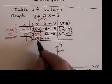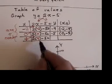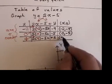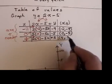And now I throw 4 in. 2 times 4 is 8. 8 minus 5 is positive 3. Okay, so 4 is going to go to the dance with 3.